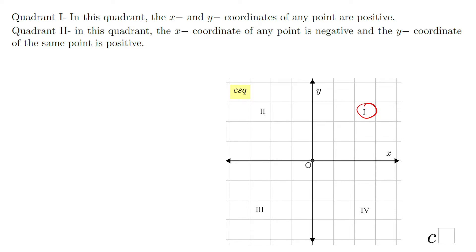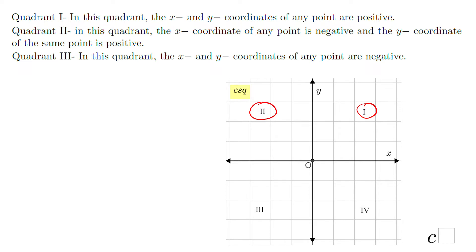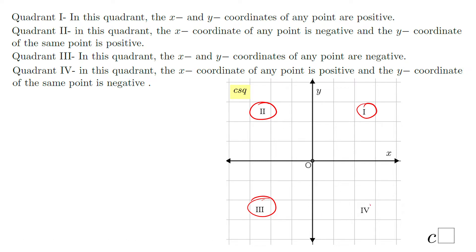Quadrant two is where the x-coordinate is negative and the y-coordinate is positive. Quadrant three is where both the x-coordinate and the y-coordinate are negative. And the last one, quadrant four, is where the x-coordinate is positive and the y-coordinate is negative.